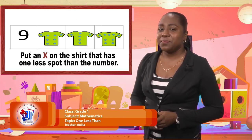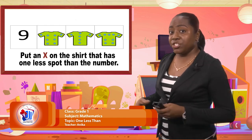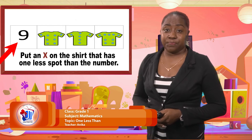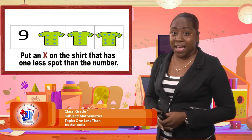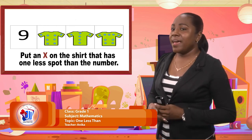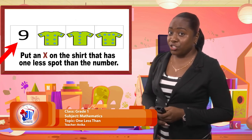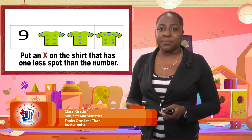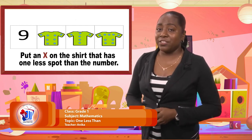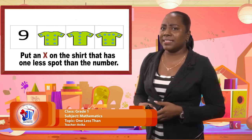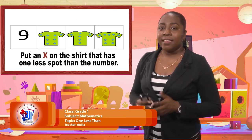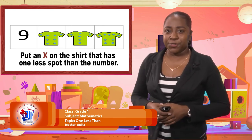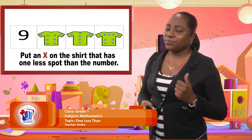You have to take your time with this one. Here we have some t-shirts. On each t-shirt we have different numbers of spots. The number we're looking at is the number nine. I would like you to put an X or identify the shirt that has one less spot than the number. If it's hard to count the spots, you can put up your fingers — nine fingers, put one finger down, and count the remaining fingers. I'll give you 10 seconds for this and then we'll reveal the answer.